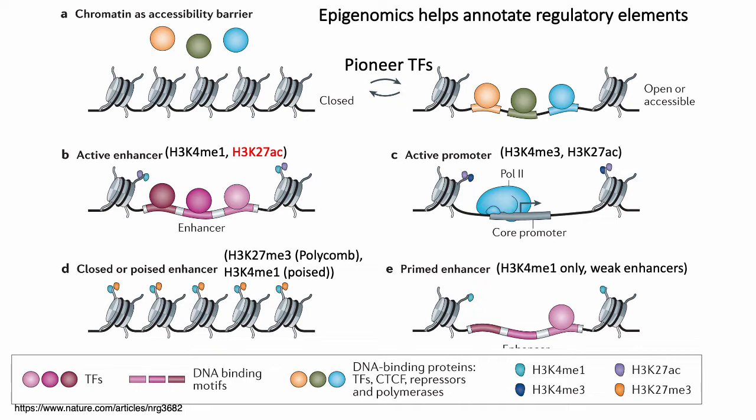When transcription factors that activate genes bind to a region, that region is considered an active enhancer. If you have repressors binding to a region, that region is generally considered a repressive element. An important point is that nucleosome positioning is highly dynamic, and transitioning between open and closed chromatin typically happens through the action of chromatin remodelers and transcription factors. Pioneer transcription factors are defined as those that make the initial binding and open up the chromatin for other factors to come in and bind.